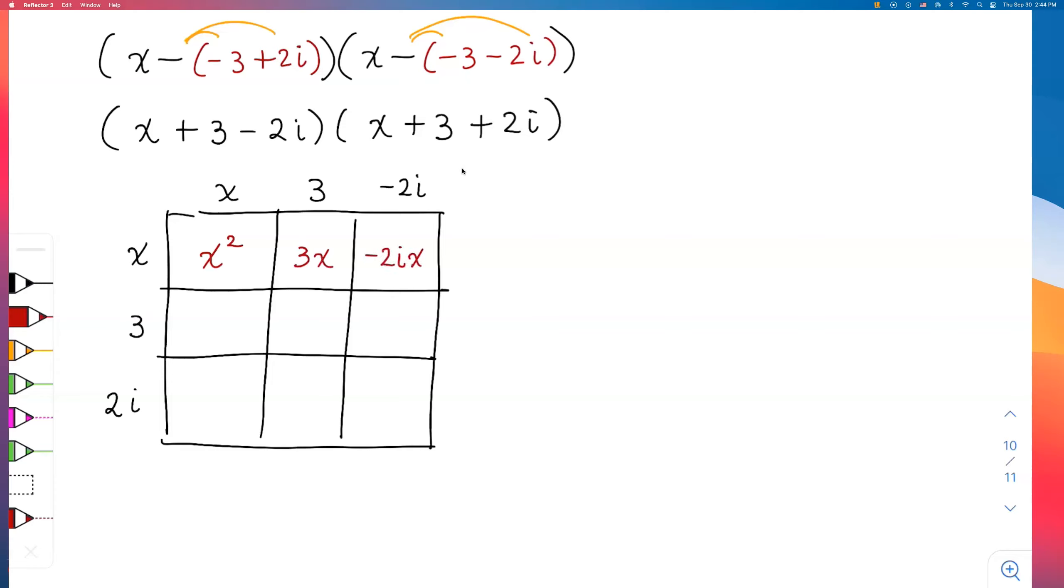-2ix. Second row: 3x, 9, -6i. And now the last row: 2ix, positive 6i, and the last one is challenging, so I would like to do that on the side.